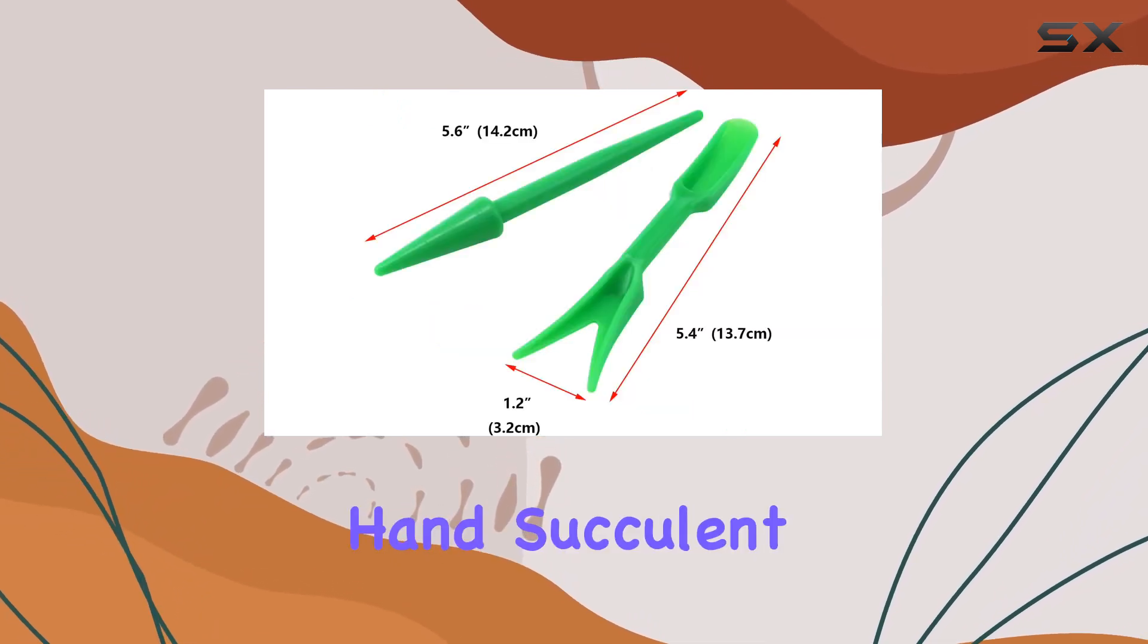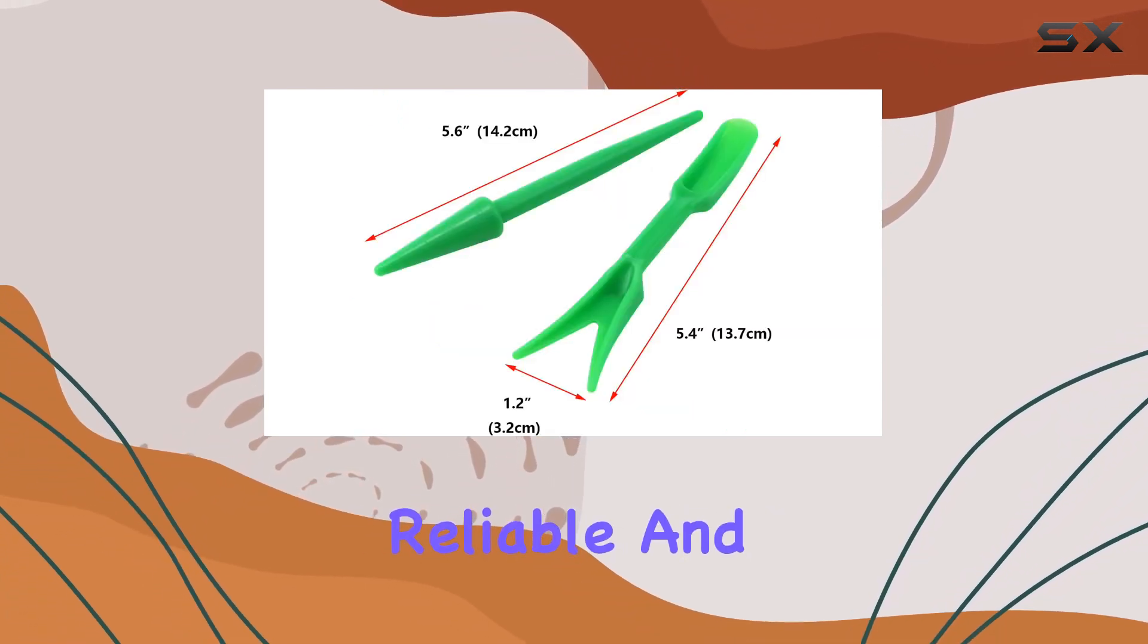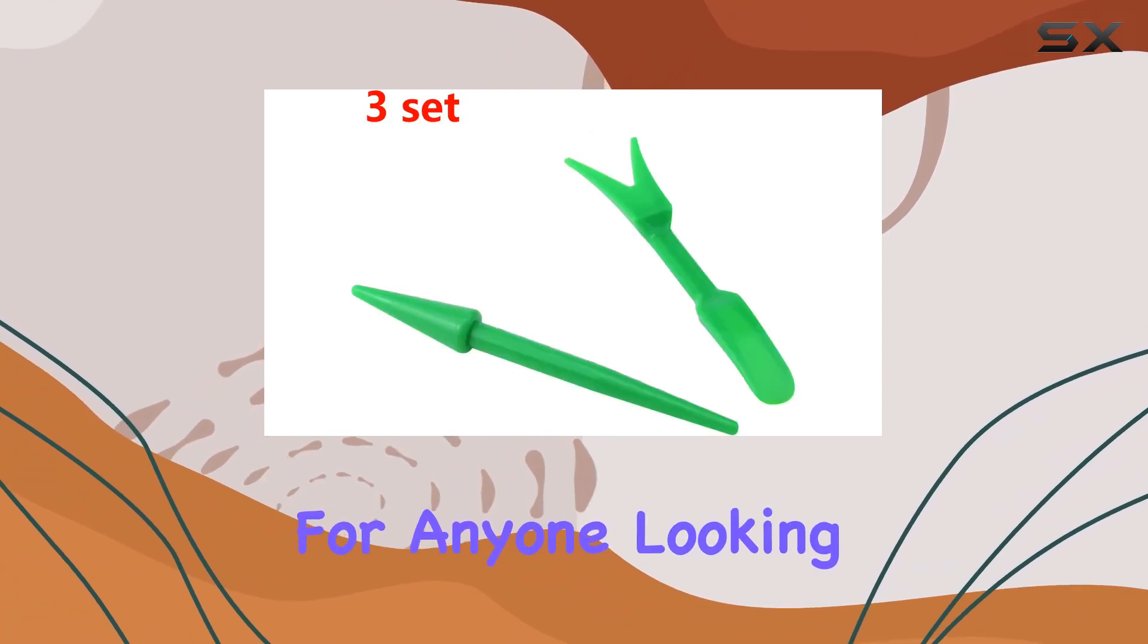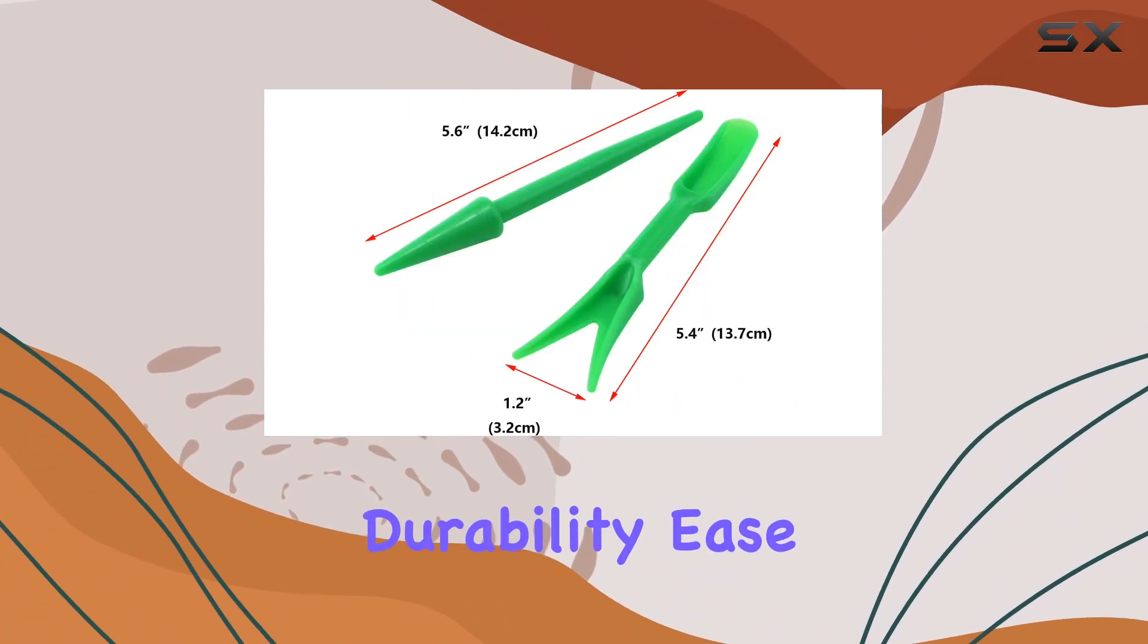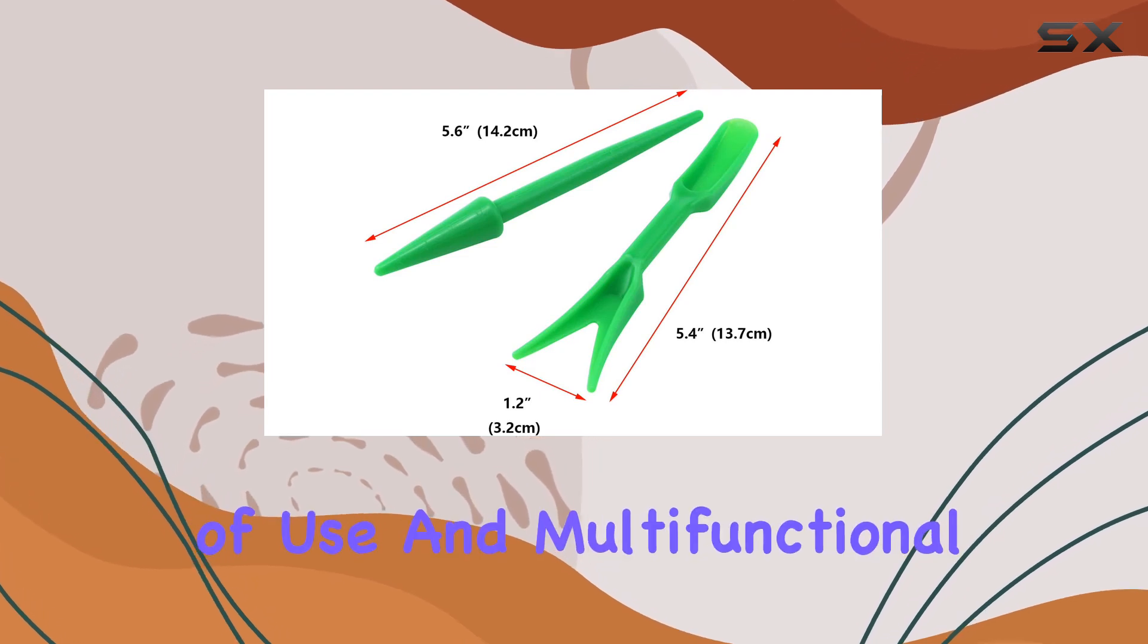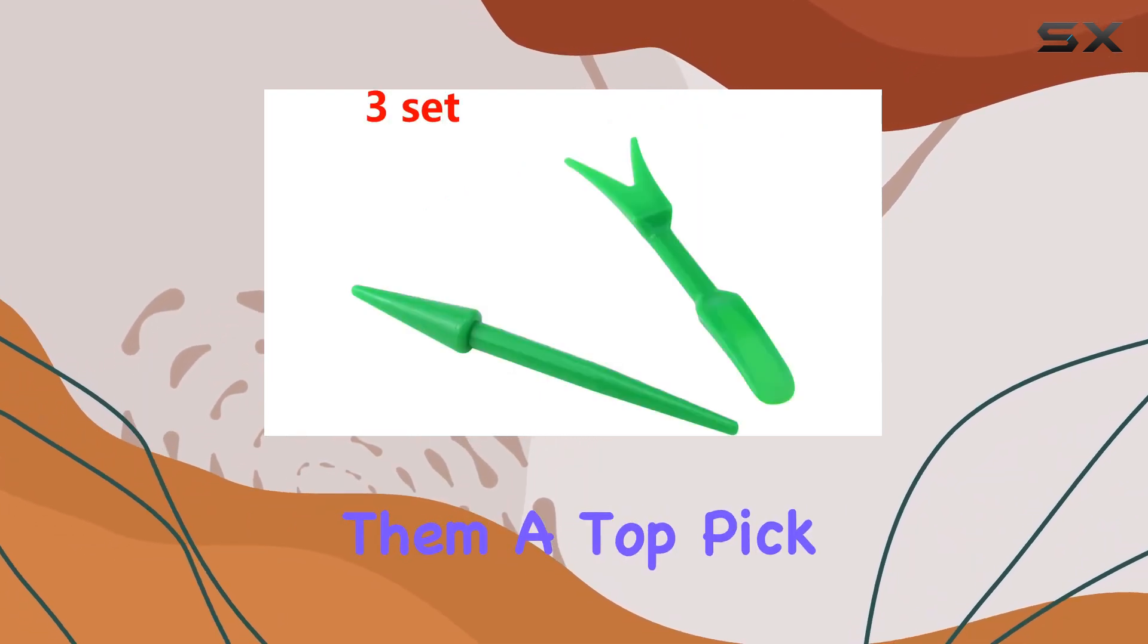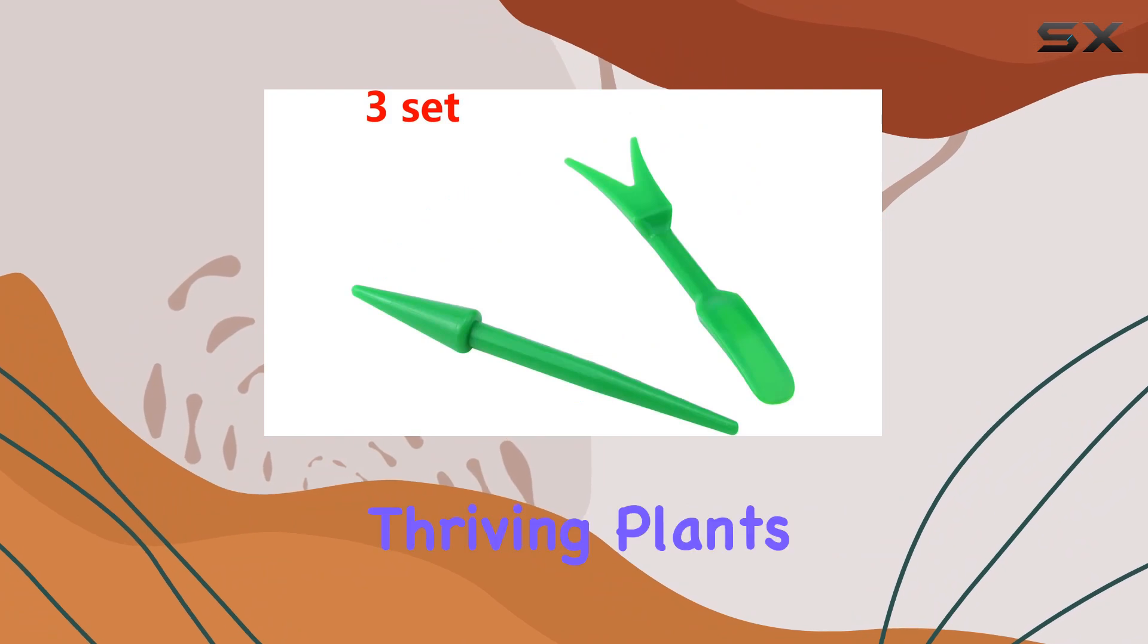Overall, the Antrader Mini Garden Hand Succulent Transplanting Tools are a reliable and handy choice for anyone looking to improve their indoor gardening experience. Their durability, ease of use, and multifunctional design make them a top pick for maintaining healthy and thriving plants.